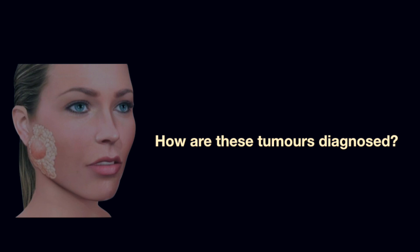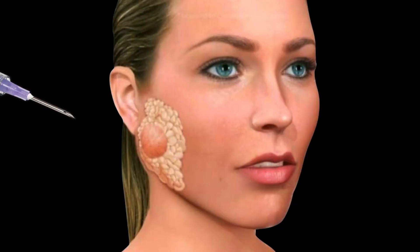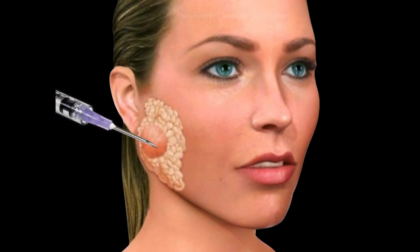How are these tumors diagnosed? If there is a suspicion that the patient has a parotid tumor, after clinical examination we do a CT scan or MRI to find out the extent of the tumor. Once we know the extent, we perform FNAC — Fine Needle Aspiration Cytology. In this method, a small needle is inserted into the parotid tumor under local anesthesia, cells are taken out and examined under a microscope, and the pathologist determines whether the tumor is benign or cancerous.